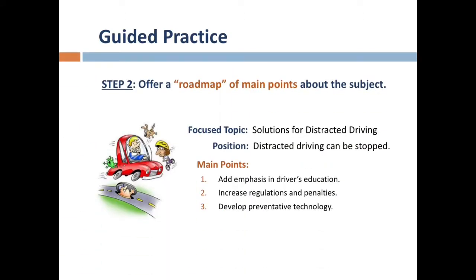After focusing your subject and taking a position, your road map will limit the essay's content by defining the main points that you plan to cover in the body. Continuing with our example, here are three possible solutions for the problem of distracted driving: we could suggest added emphasis in drivers' education, increased regulations and penalties, or suggest that someone develop preventative technology. Notice that each one of these subpoints is a subcategory that promises the reader a new layer of ideas, each clearly related to the focus topic.